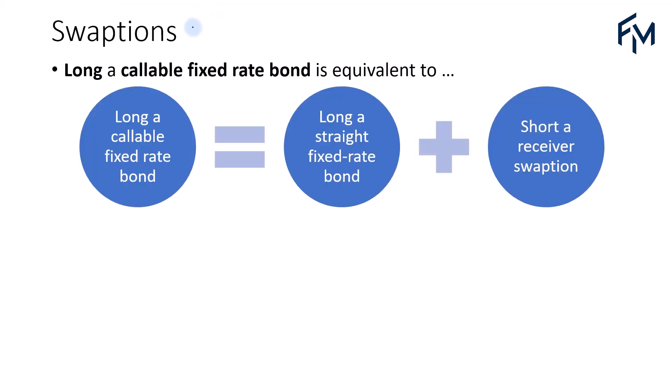We can also say that when you long a callable fixed rate bond, it is equivalent to long a straight fixed rate bond and short a receiver swaption. When the investor buys a callable bond, there is always a risk that the issuer will call the bond back and reissue it at a lower rate, which is a risk to bond investors because they may receive the bond at a lower rate, or have the bond repurchased by the issuer at a price lower than the market price.